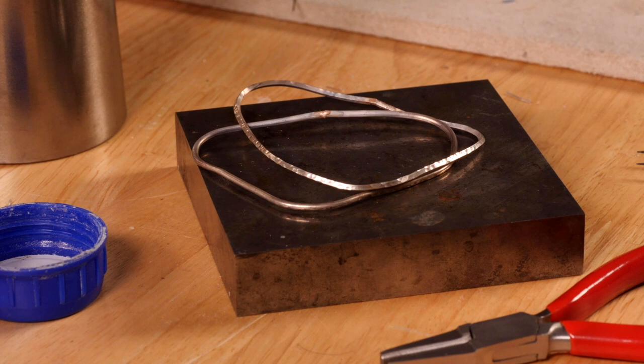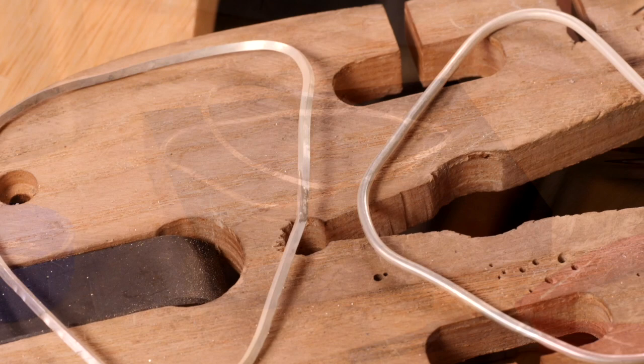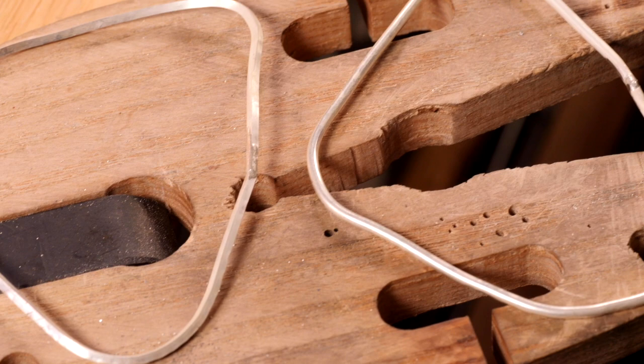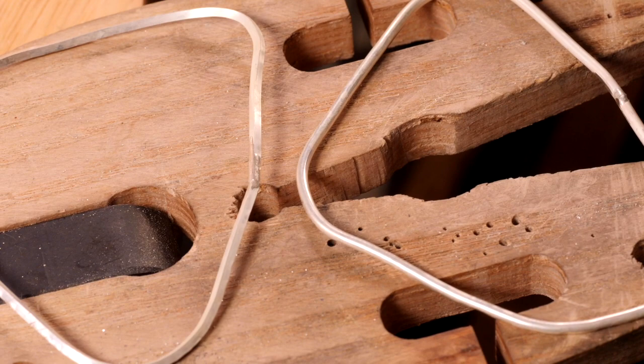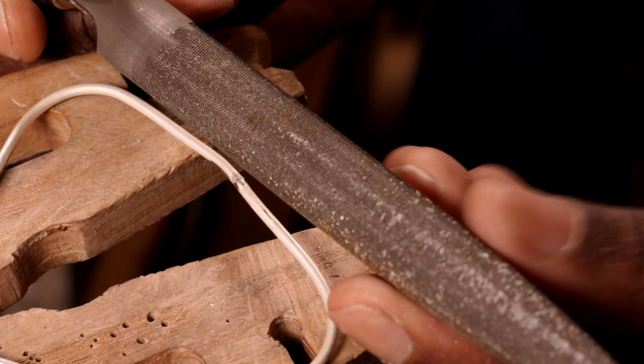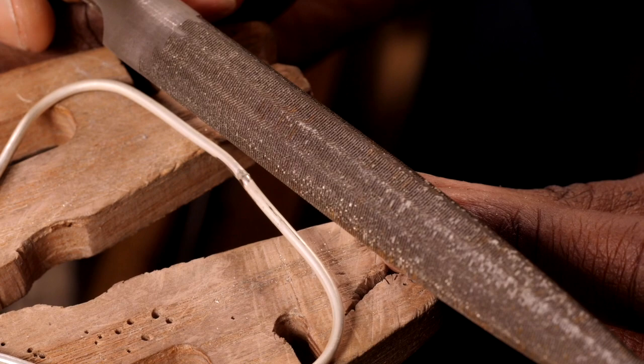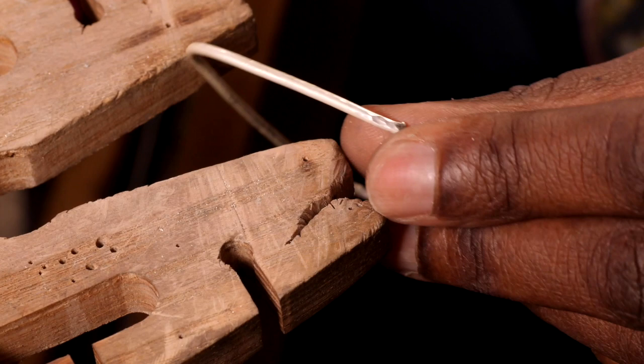And now I'm going to just put that one on my steel block just to cool down before I pickle it. I've now soldered and pickled both of my bangles. I have a few solder marks, so I'm just going to use my file just to tidy those up. I'm using my half-round file, and I'm going to be using the half-round section just to gently touch up and clean up those solder seams.